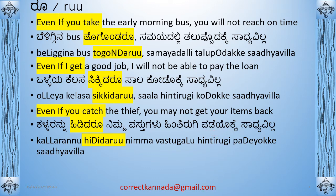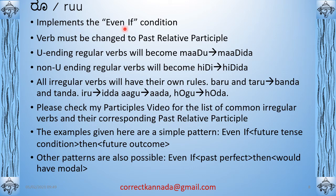The 'ru' suffix implements an 'even if' condition, similar to how 're' implements an 'if' condition. The verb must be changed to past relative participle — the same rules as 're'. For example, 'madu' becomes 'madida'; 'hidi' becomes 'hidida' for non-'u' ending verbs. Irregular verbs have their own rules: 'baru' and 'taru' become 'banda' and 'tanda'; 'iru' becomes 'idda'; 'agu' becomes 'ada'; 'hogu' becomes 'hoda'. Please check the participles videos for irregular verbs. 'Ru' can express even-if future conditions with future outcomes, or even-if past-perfect conditions with modal forms.